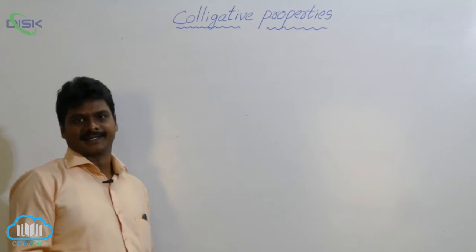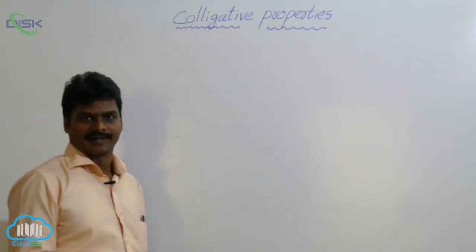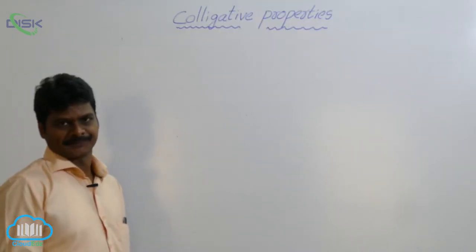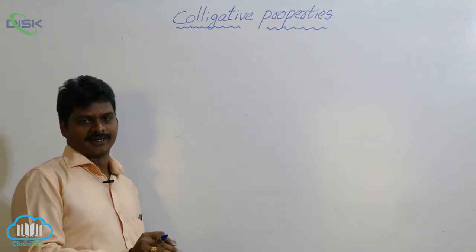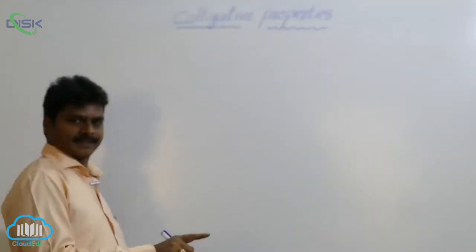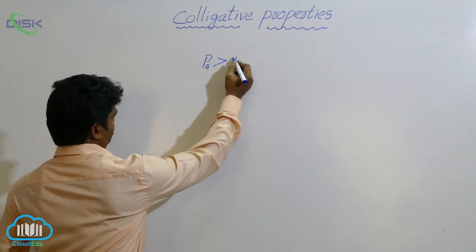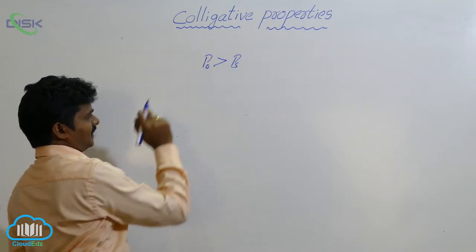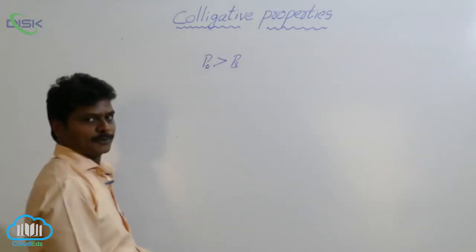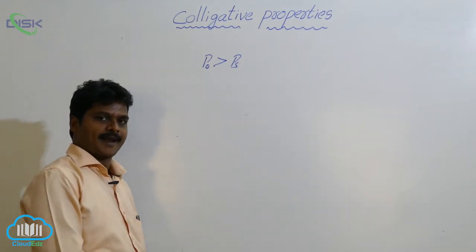When a non-volatile solute is dissolved in a pure volatile solvent, its vapor pressure decreases. If P naught is the vapor pressure of the pure solvent and P s is the vapor pressure of the solution containing the non-volatile solute, then P naught is greater than P s.